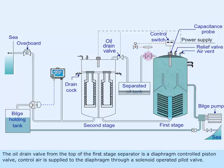The oil drain valve from the top of the first stage separator is a diaphragm controlled piston valve. Control air is supplied to the diaphragm through a solenoid operated pilot valve.